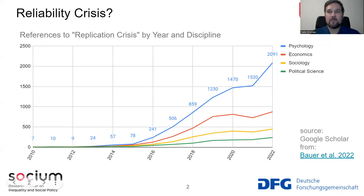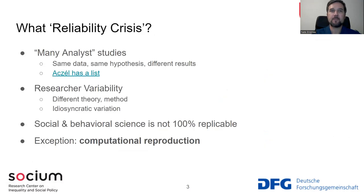By now, you've heard talk of the reliability crisis. Here's a quick overview: references to the replication crisis by year and discipline in four major social science disciplines. As you can see, it's increased markedly since the mid-2010s. A quick reminder of what we're talking about with the reliability crisis.